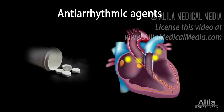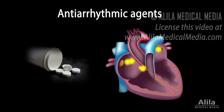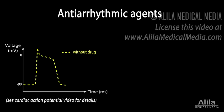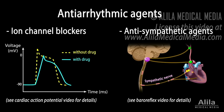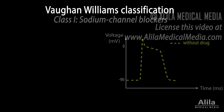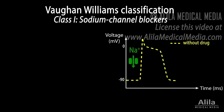Antiarrhythmic agents are drugs used to suppress abnormal rhythms of the heart. They act to either interfere with the dynamics of cardiac action potentials by blocking a certain ion channel, or block the sympathetic effects of the autonomic nervous system on the heart to slow down heart rate. There are five classes of antiarrhythmic drugs. Class 1: sodium channel blockers.